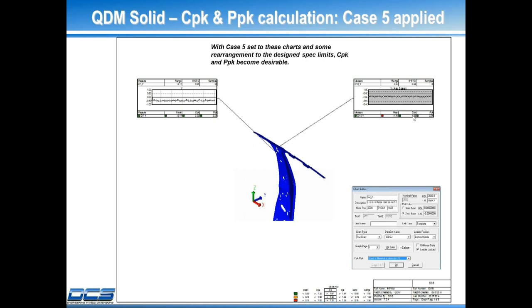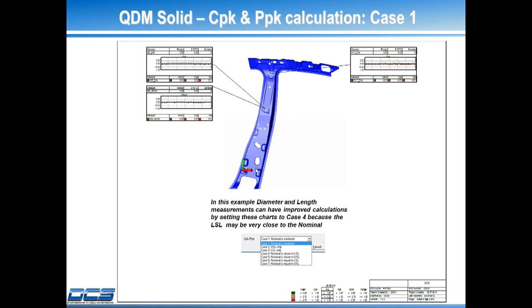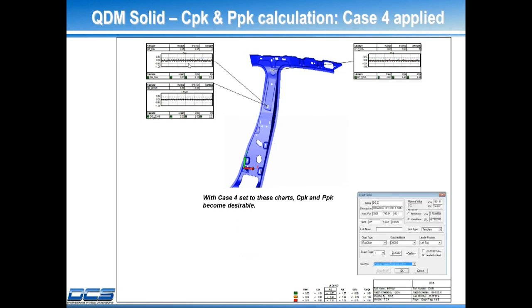Since we've picked the correct case, we've got a CPK of 1.8. Now in this screen example, we've got a couple of diametric and a length feature that will have some CPK and PPK near zero or slightly below zero at the default case one. By choosing the appropriate case — in this one, case four — we made these desirable. We had nice high PPKs and CPKs in the 2.5s and 3s, in this case all the way up to 5.6.